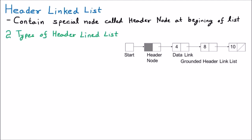There are two types of header link list. The first one is the grounded header list and the second one is the circular header list. In the grounded header list, you can see there are three nodes — node one, node two, and node three — which are the normal nodes storing elements four, eight, and ten. Every node has a pointer pointing to the next node, and at the last node we have null.